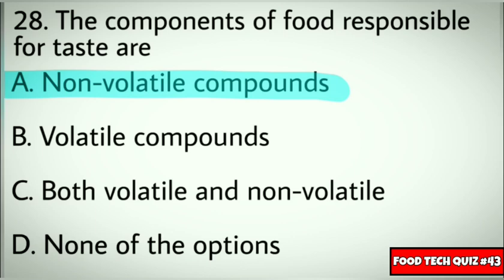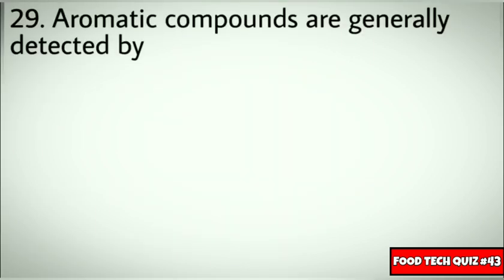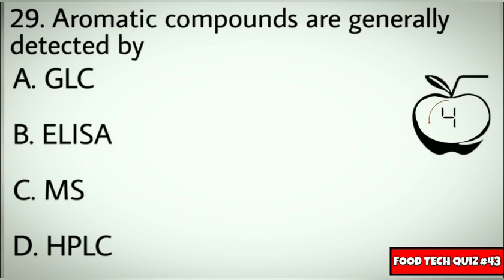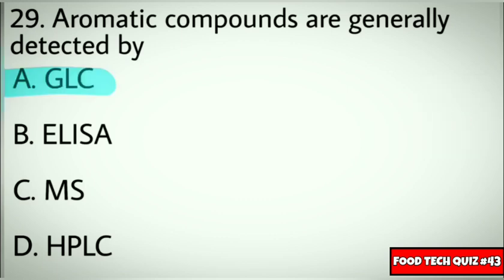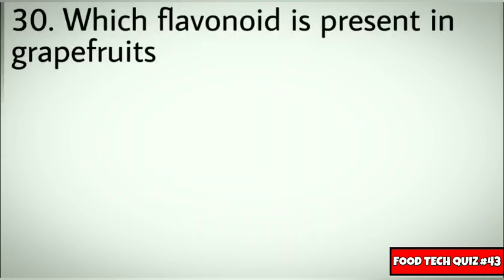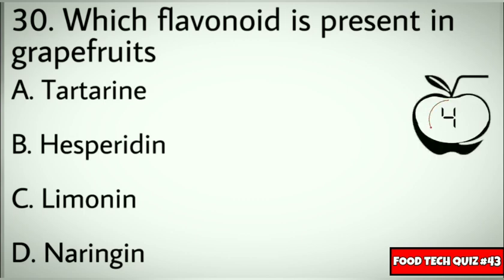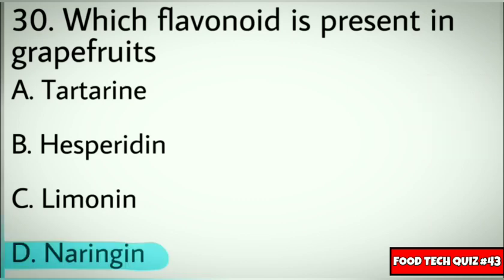Question number 29: Aromatic compounds are generally detected by? Options: A) GLC, B) ELISA, C) MS, D) HPLC. Correct answer: A) GLC. Question number 30: Which flavonoid is present in grapefruits? Options: A) Tartarin, B) Hesperidine, C) Limonin, D) Naringin. Correct answer: D) Naringin.